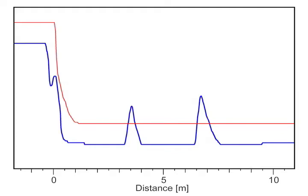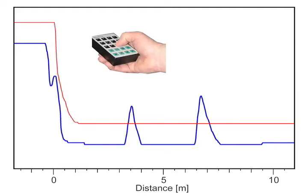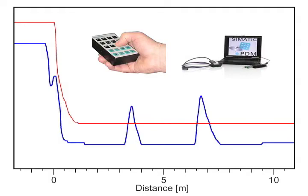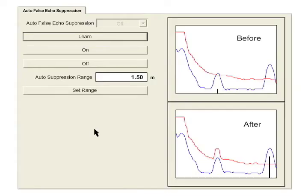We can set the Auto-False Echo Suppression parameter with either the Handheld Programmer or Somatic PDM. I will show you how this is done with Somatic PDM. First, you select the Auto-False Echo Suppression tab.